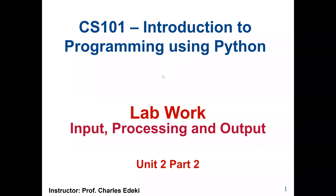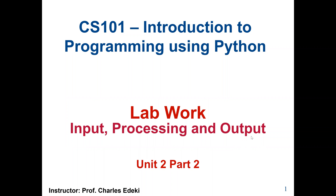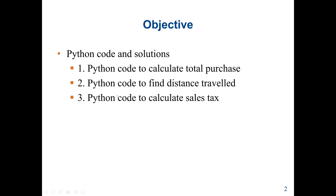Welcome to CS101, Introduction to Programming Using Python. This lab covers chapter two of our course textbook, which is Input, Process, and Output. Our main objective is solving three problems using the Python programming language, focusing on input — how the user can get input into our Python program. Processing will be arithmetic operations, and then we are going to print out the results. We will use the input function to ask the user to enter inputs using a keyboard.